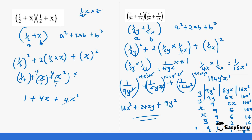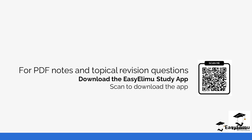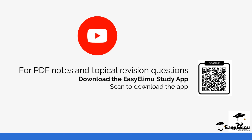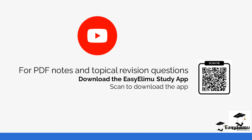So that's how we use the identity. The identity for (a + b) squared is a squared plus 2ab plus b squared — keep that in mind instead of doing the large expansion. Check out more revision questions and notes. See you in the next lesson.